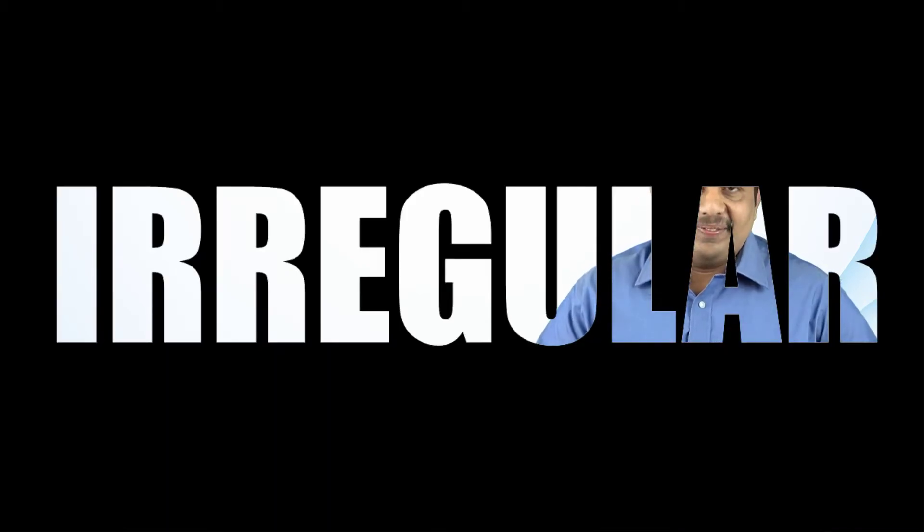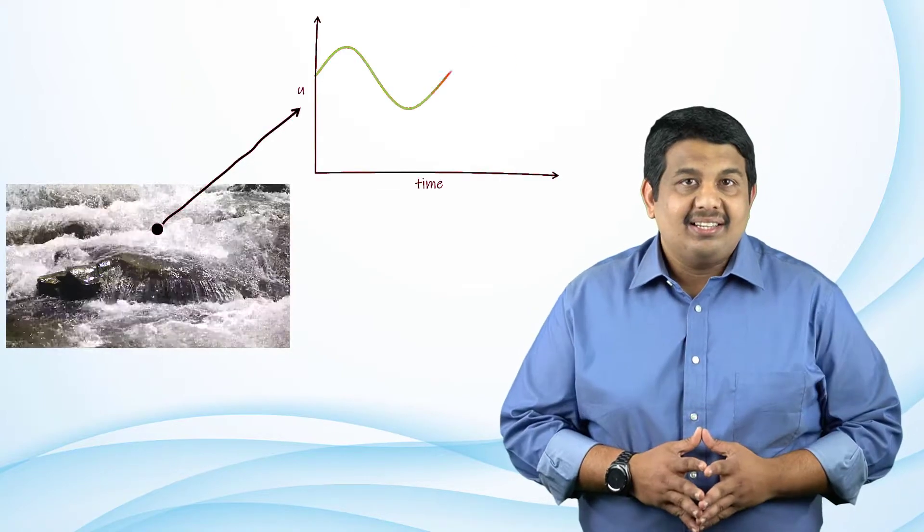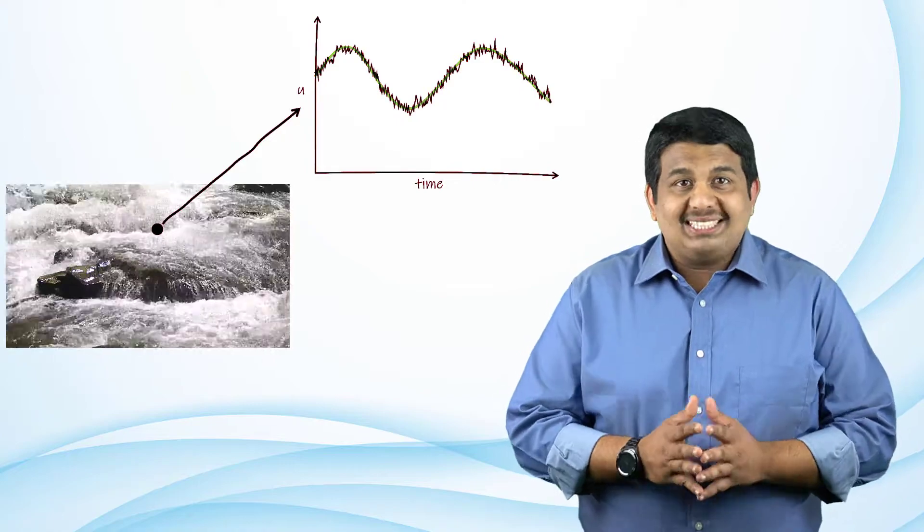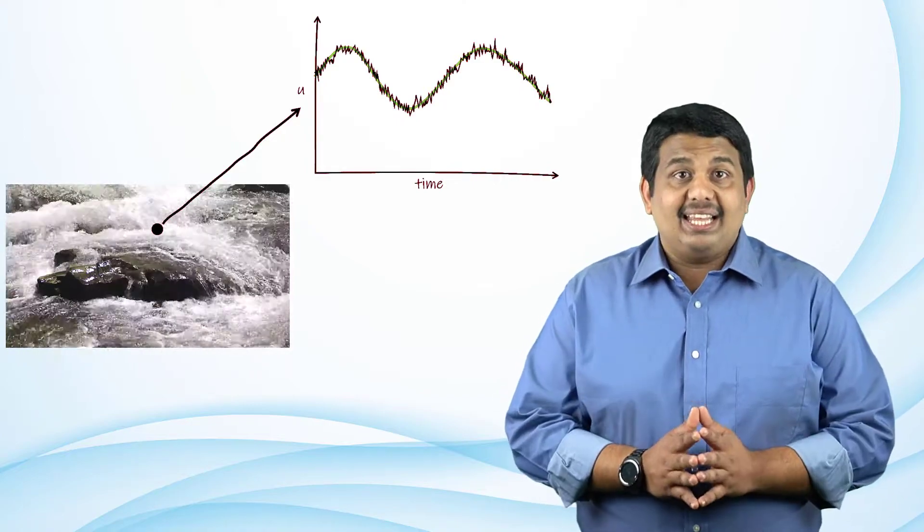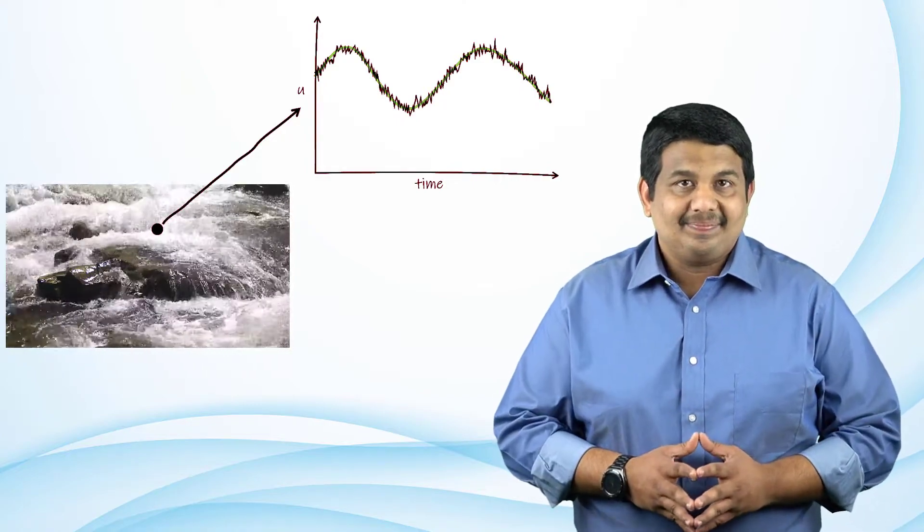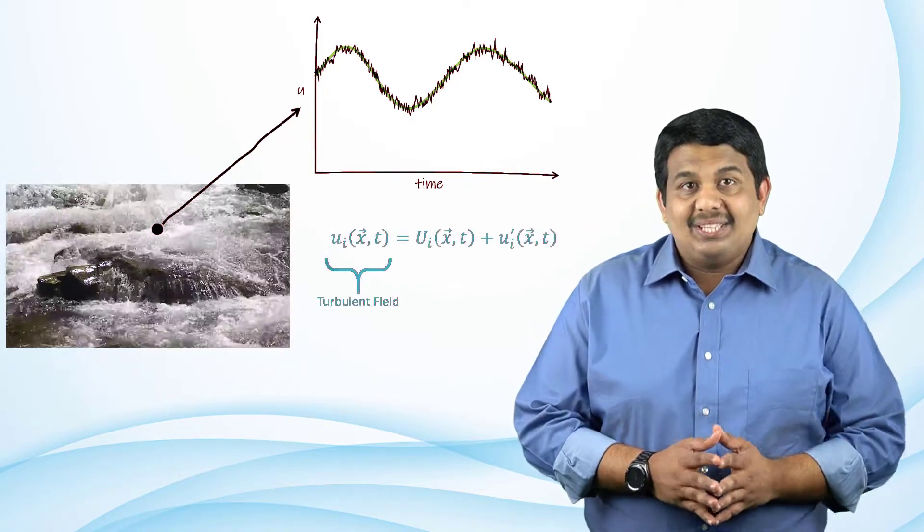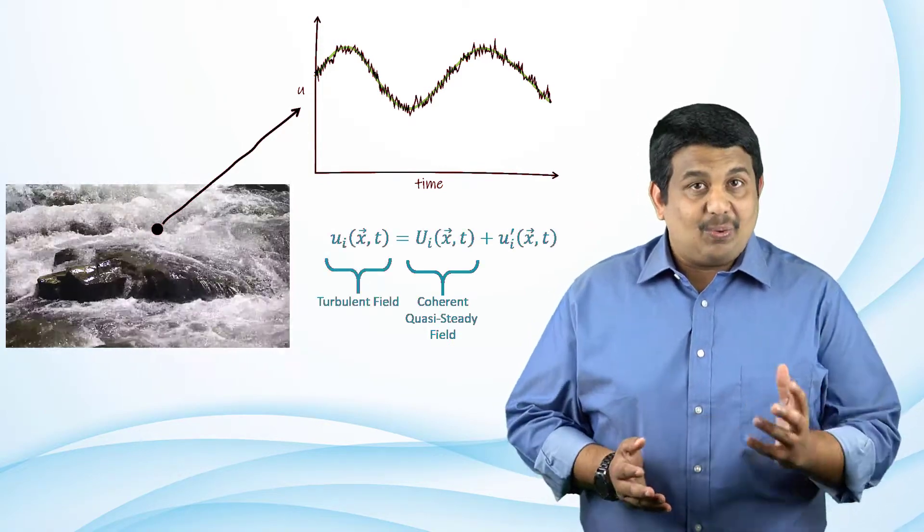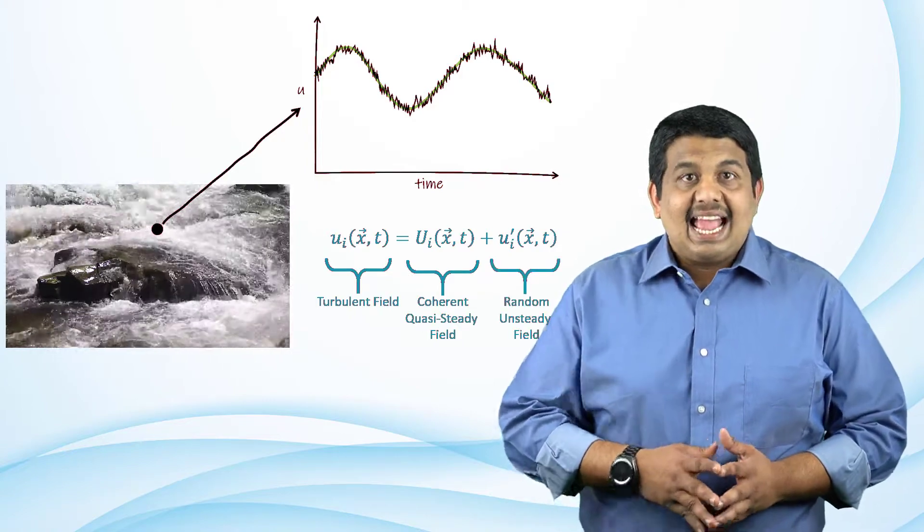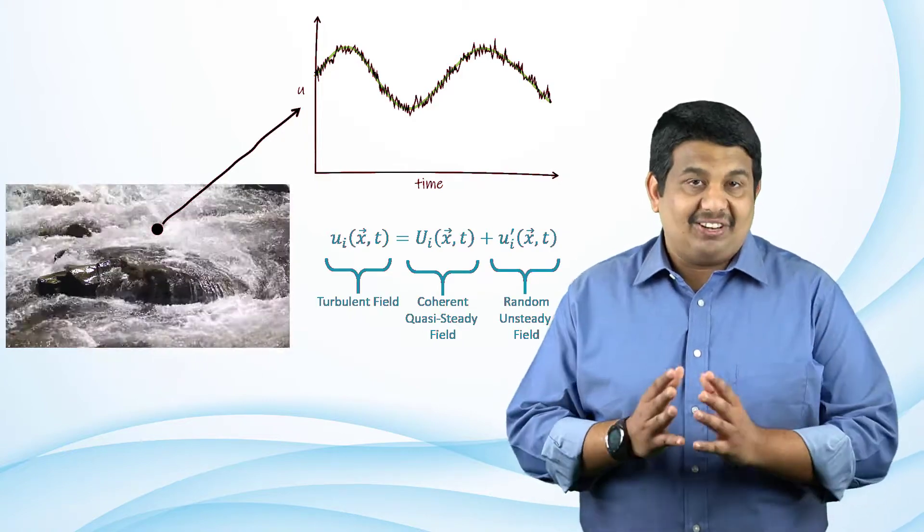Irregular or Unsteady. All turbulent flows are inherently unsteady. If you take a turbulent river flow and measure the flow velocity at a given point, you will probably notice a graph that looks like the one shown here. This turbulent field can be decomposed into a steady or quasi-steady mean field and unsteady random fluctuations.